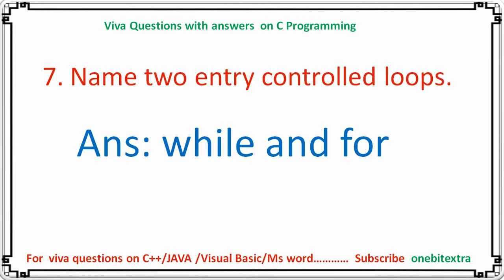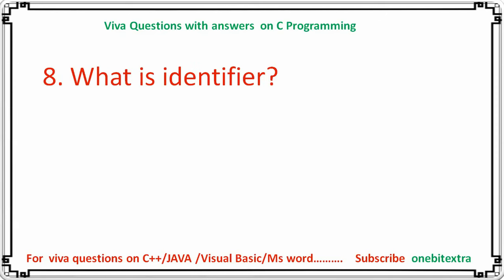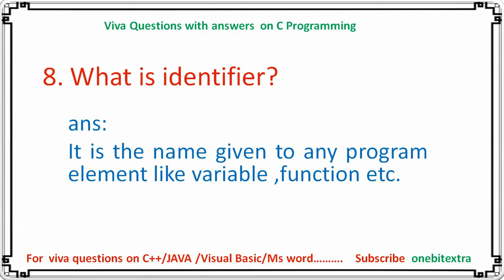Next question: what is an identifier? The answer is it is the name given to any program element like a variable or function. It is the name that we give to a program element such as a variable or function.